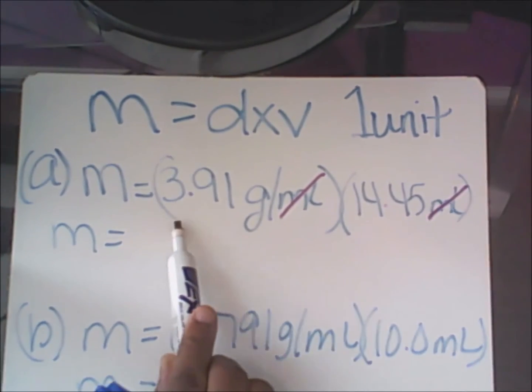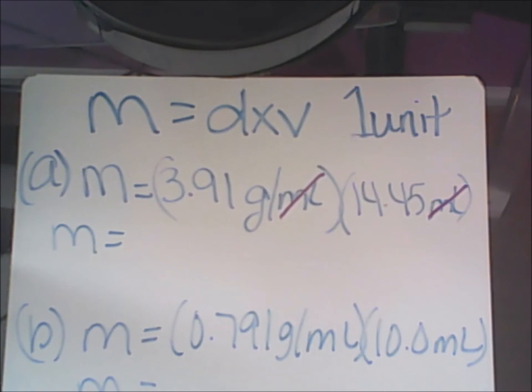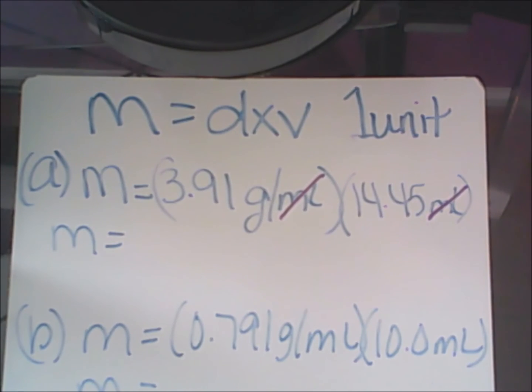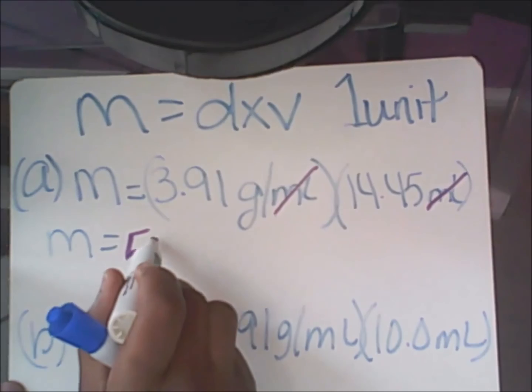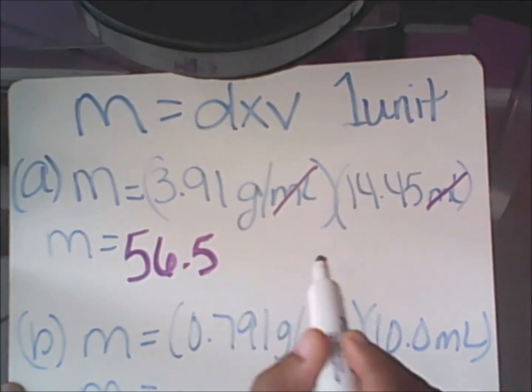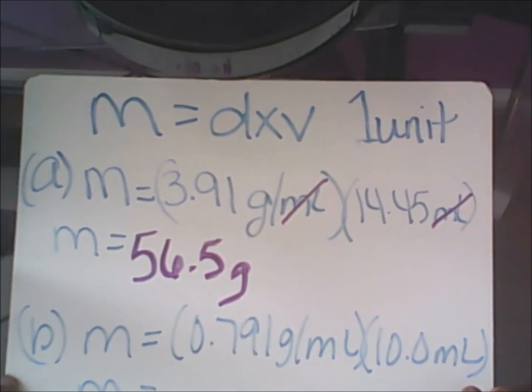I have three significant digits in the first number, I have four significant digits in the last number. When I multiply those two numbers together, I should only record three of those numbers. In this case, 56.5 grams will be my final answer.